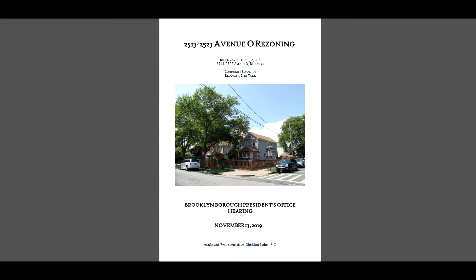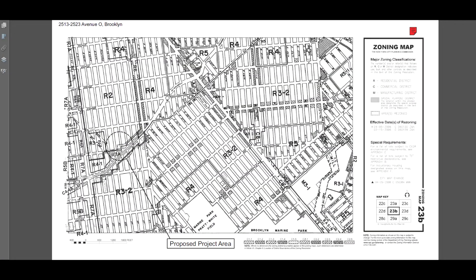The four lots total roughly 10,000 square feet of lot area. The proposal would rezone them from R2 to R3-2. The bulk regulations affecting the R2 and R3-2 districts are largely the same, with the major difference being that in the current R2 district medical offices are not permitted, while in the R3-2 district medical offices would be permitted as of right. This is particularly relevant to the applicant, a doctor with medical offices on lots one and two.